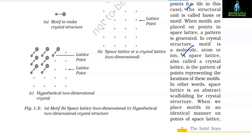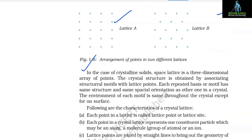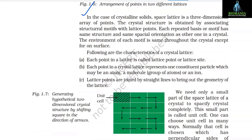A space lattice is an abstract scaffolding for crystal structure. When motifs are placed identically on points of a space lattice, we get the crystal structure. A spatial arrangement of lattice points gives rise to different types of lattices. In crystalline solids, a space lattice is a three-dimensional array of points. The crystal structure is obtained by associating structural motifs with lattice points — each motif has the same structure and spatial orientation, and the environment of each motif is the same throughout the crystal.